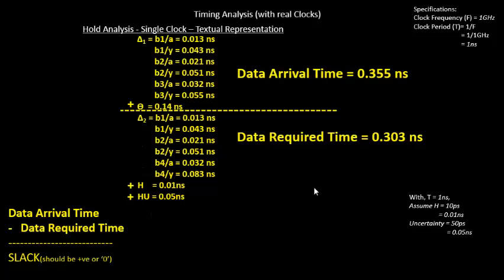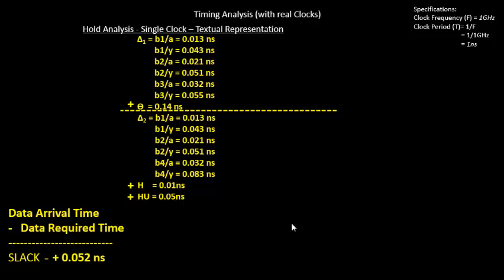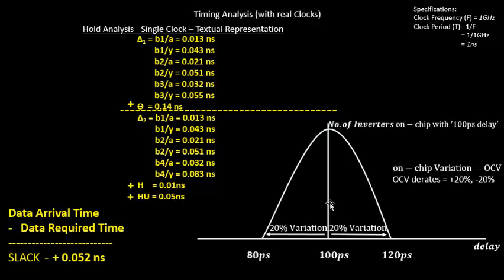The slack is data arrival time minus data required time: 0.355 − 0.303 = 0.052 nanoseconds, or 52 picoseconds. This is a positive slack, which is good for us.